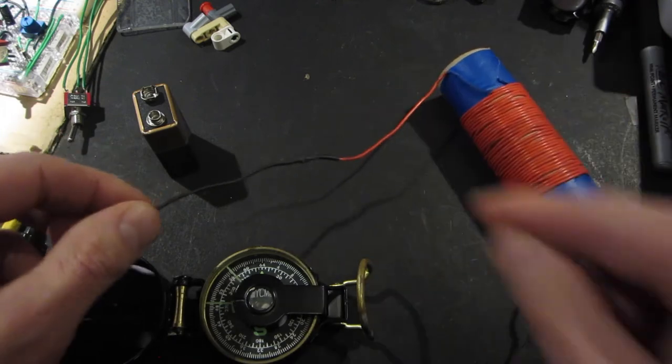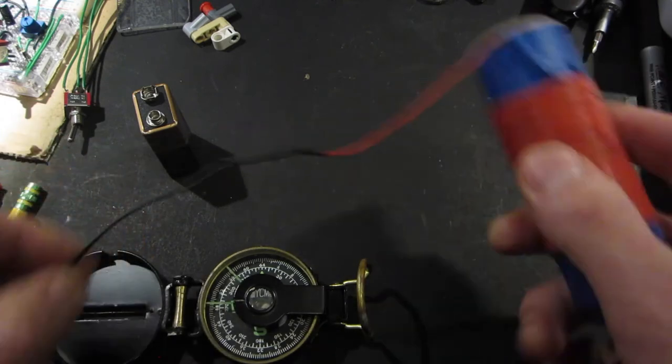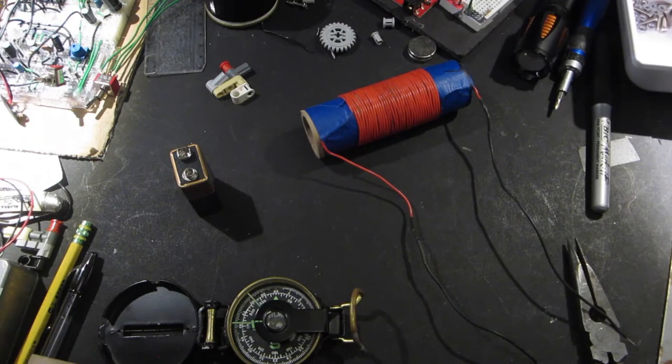So again, we're going to wind a coil, plus it allows us to concentrate the magnetic field. So, this is an experiment that was originally done by a gentleman, a Danish guy, named Hans Christian Ørsted.